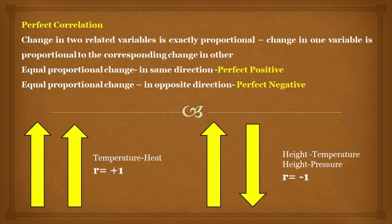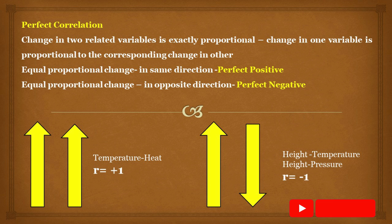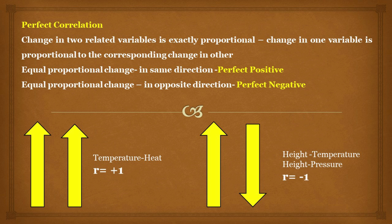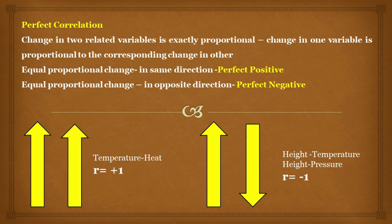The second type of correlation is perfect correlation. If the change in two related variables is exactly proportional — that is, the change in one variable is proportional to the change in the other — then it is called perfect correlation. If the proportional changes are in the same direction, there is perfect positive correlation, denoted by a correlation coefficient of +1. If the proportional changes are in the reverse direction, it is perfect negative correlation, represented by −1. Such conditions are rarely occurred.